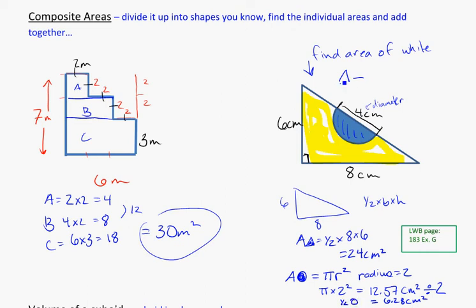So the triangle minus the half circle. So that's going to be 24 minus 6.28. And that is going to be equal to 17.72 centimeters squared. So that's my area of that yellow part of the shape.